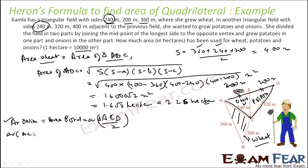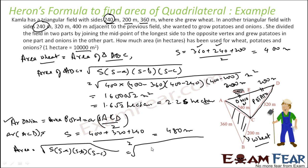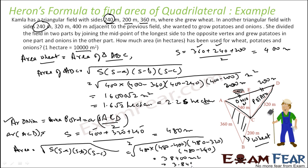For triangle ACD, the sides are 400, 320, and 240. So S = (400 + 320 + 240) / 2 = 480. Applying Heron's formula: area = √(480 × (480−400) × (480−320) × (480−240)) = √(480 × 80 × 160 × 240), which comes out to be 38,400 meter square. Converting to hectares gives 3.84 hectare.